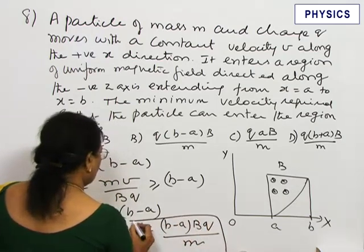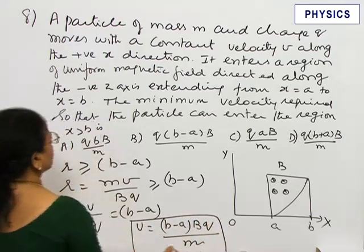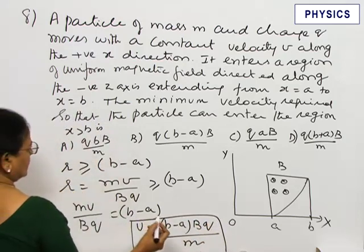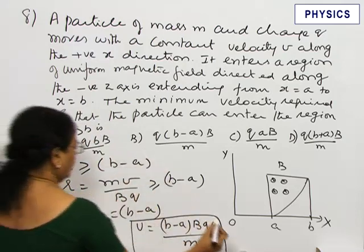For this minimum value of velocity, it can enter the region X greater than B. Option B.